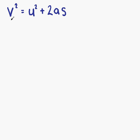V stands for final speed. U represents initial speed. A represents the object's acceleration, and S represents the displacement of the object.